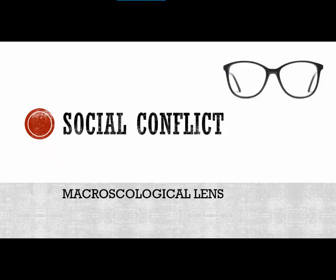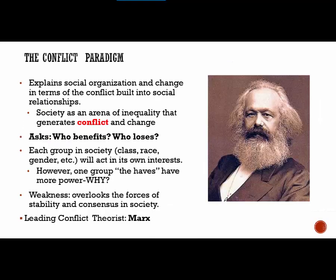Coming now to the second macro sociological perspective: the social conflict lens. This lens is easy to remember because the functionalist and conflict frameworks are basically opposites. If structural functionalism emphasizes social stability, the conflict paradigm emphasizes the role of conflict. It explains social organization and change in terms of conflict built into social relationships. Conflict theorists see society as an arena of inequality, and because of this there is continuous conflict and change. The big question the conflict paradigm asks is: who benefits and who loses? Whether talking about media, education, or relationships, the focus is on who finds social arrangements beneficial and who loses.